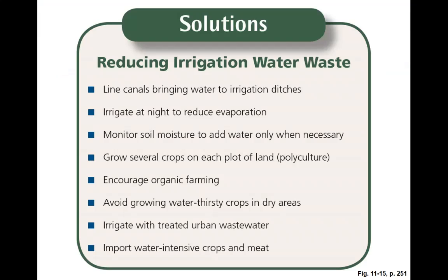So to summarize irrigation waste reduction: line canals, irrigate at night, monitor soil moisture, encourage organic farming, avoid growing water-thirsty crops, irrigate with treated urban wastewater. Import water-intensive crops and meat rather than growing them locally in areas that would require a lot of water. This relates to the food miles discussion — sometimes the environmental inputs are so heavy that it's better to ship things in instead.